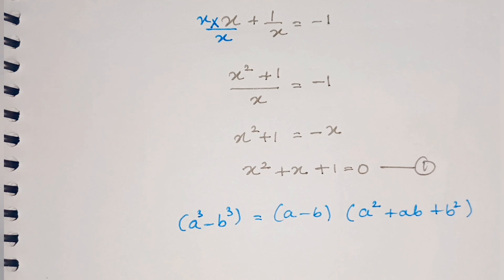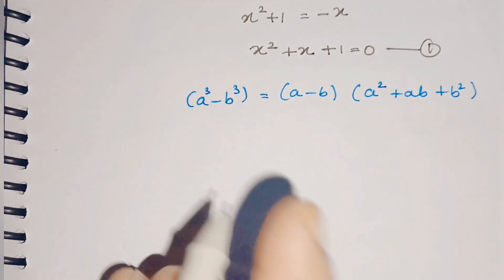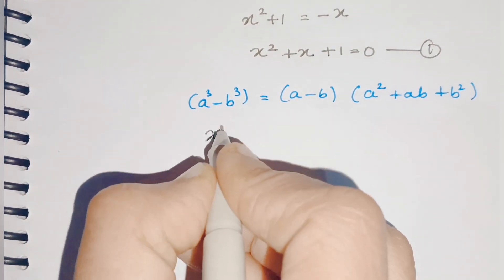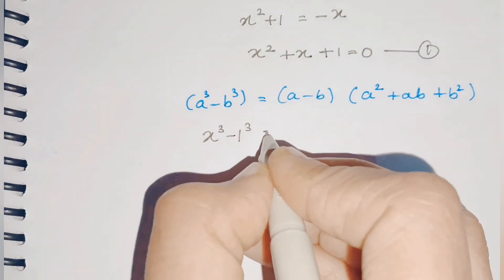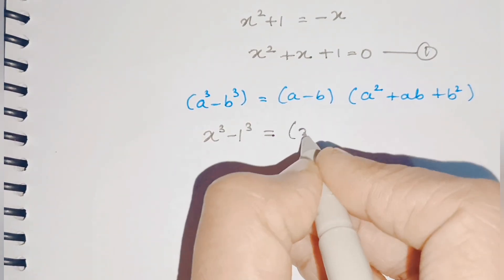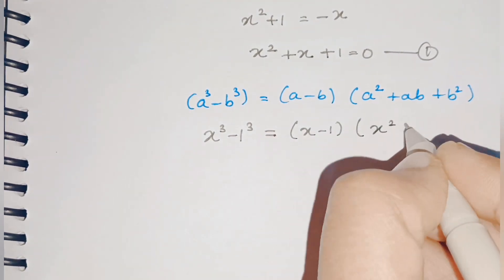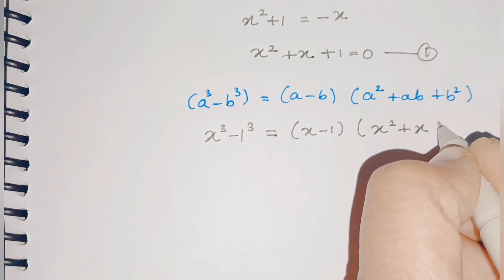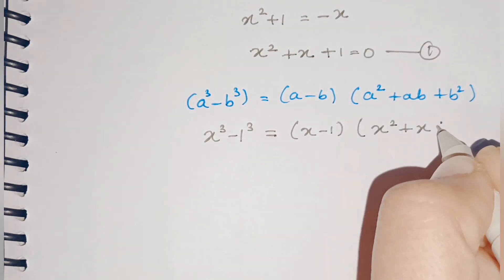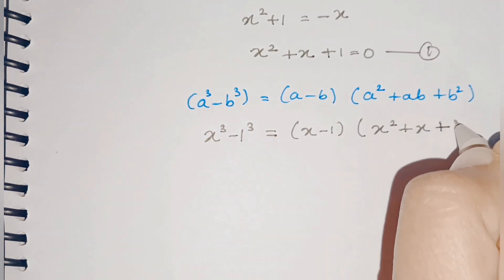I can use this formula to calculate the value of x³ - 1³. So this will be x³ - 1 = (x - 1)(x² + x·1 + 1²), where a is x and b is 1. So this is (x - 1)(x² + x + 1).